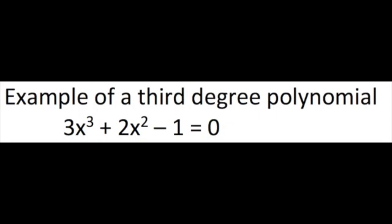An example of a third degree polynomial is the equation written at the bottom: 3x³ + 2x² - 1 = 0.